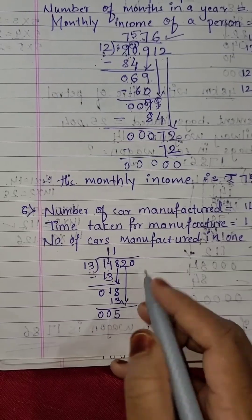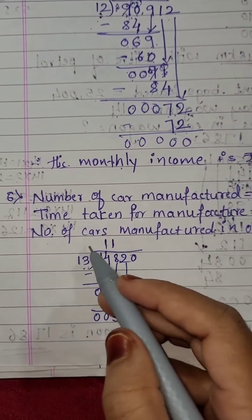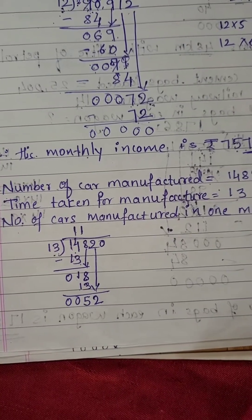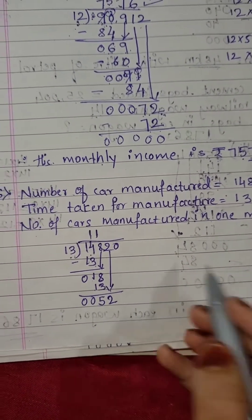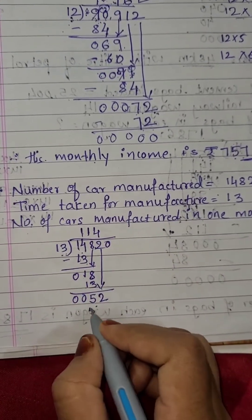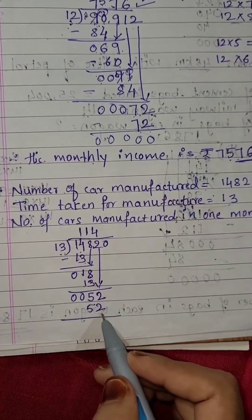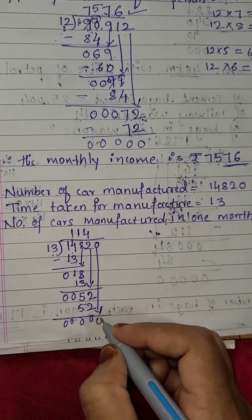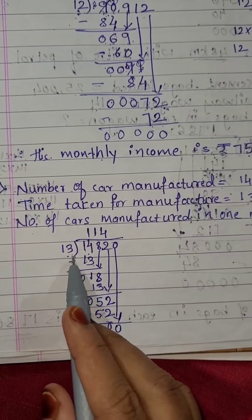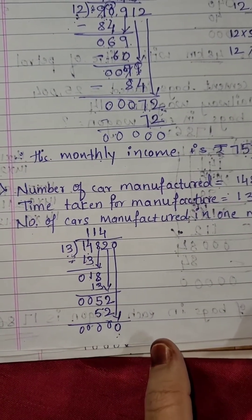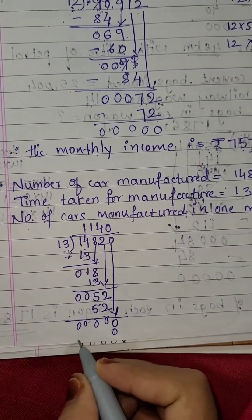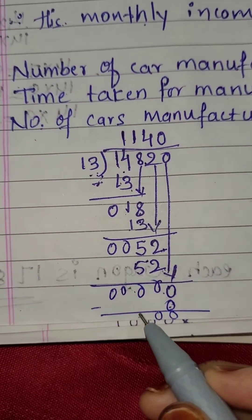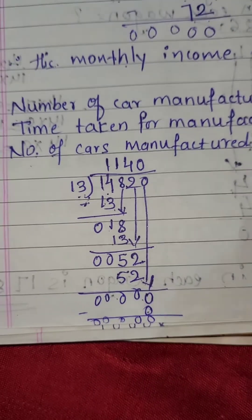Bring down the next number 2 — it becomes 52. Read the 13 table: 13×1=13, 13×2=26, 13×3=39, 13×4=52. So 13×4=52. Subtract: 2 minus 2 is 0, 5 minus 5 is 0. Bring down the next number 0. You cannot divide 0 by 13, so write 0 in the quotient and subtract: 0 minus 0 is 0.